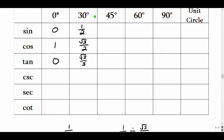Keep in mind the radian equivalents: 0° is 0 radians, 30° is π/6 radians, 45° is π/4 radians, 60° is π/3 radians, and 90° is π/2 radians. We may also talk about 180°, which is π radians.